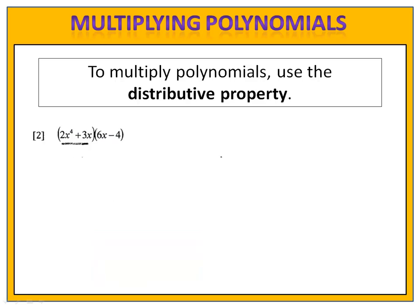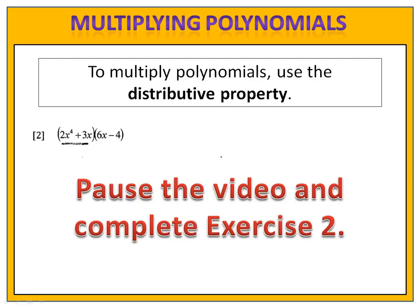In exercise 2, we have 2x to the 4th plus 3x times 6x minus 4. Once again, we're going to use the distributive property twice — first to distribute the 2x to the 4th and then to distribute the 3x. Use example 1 as your guide. Please pause the video here and complete the exercise.